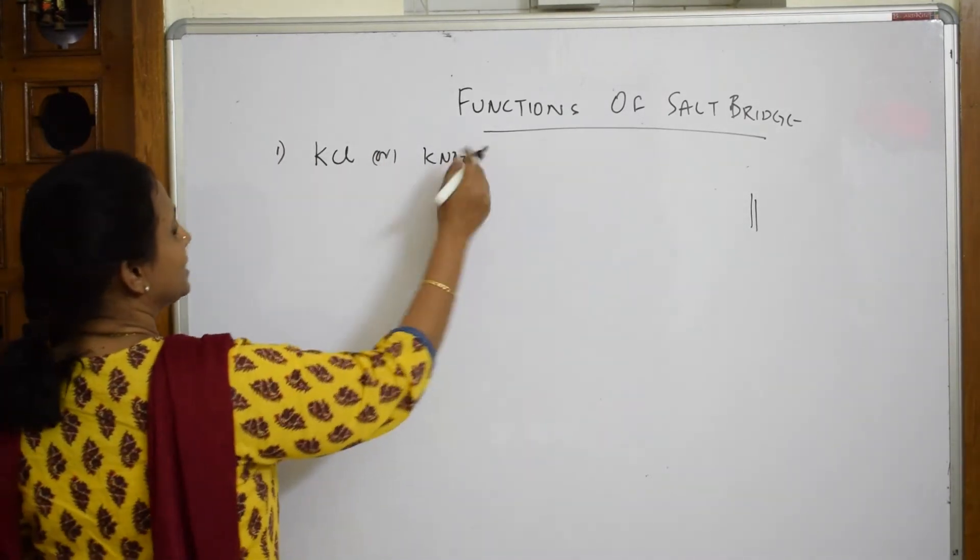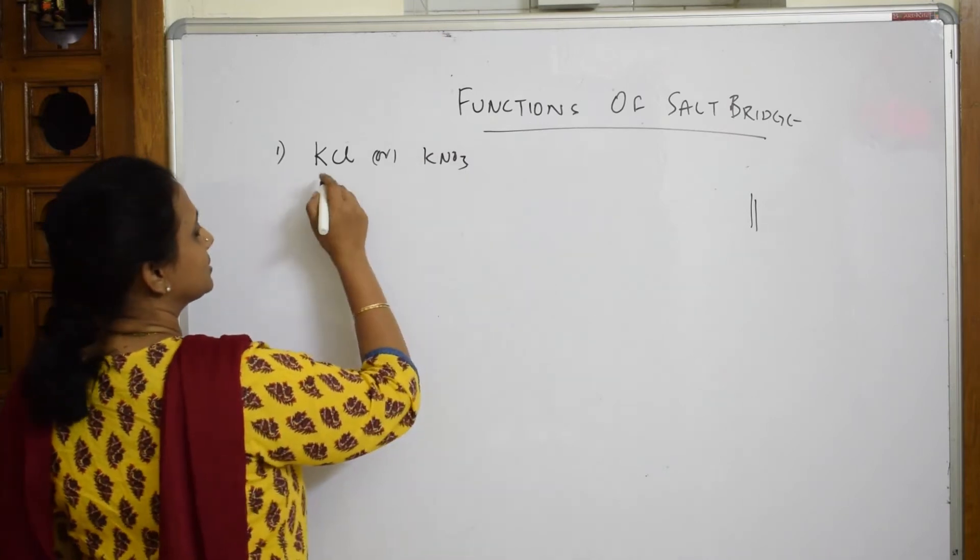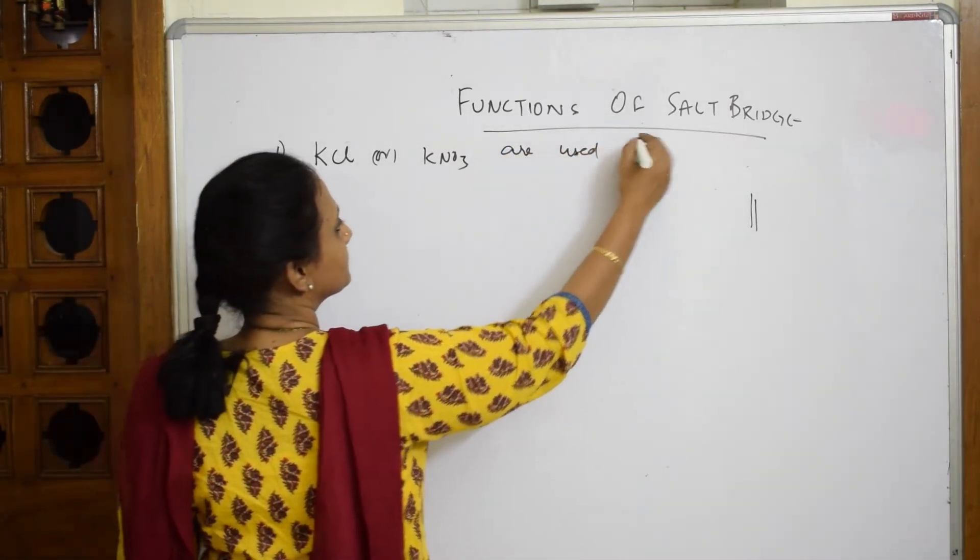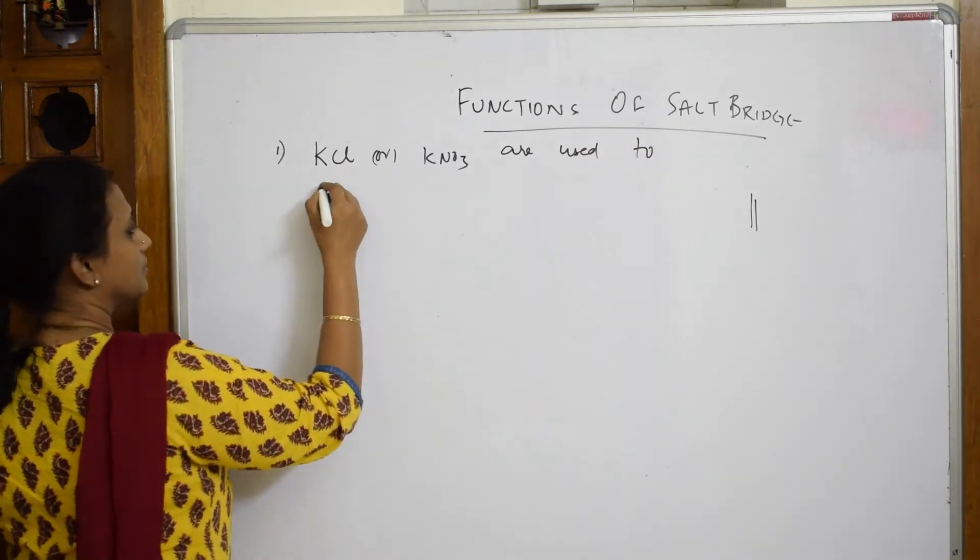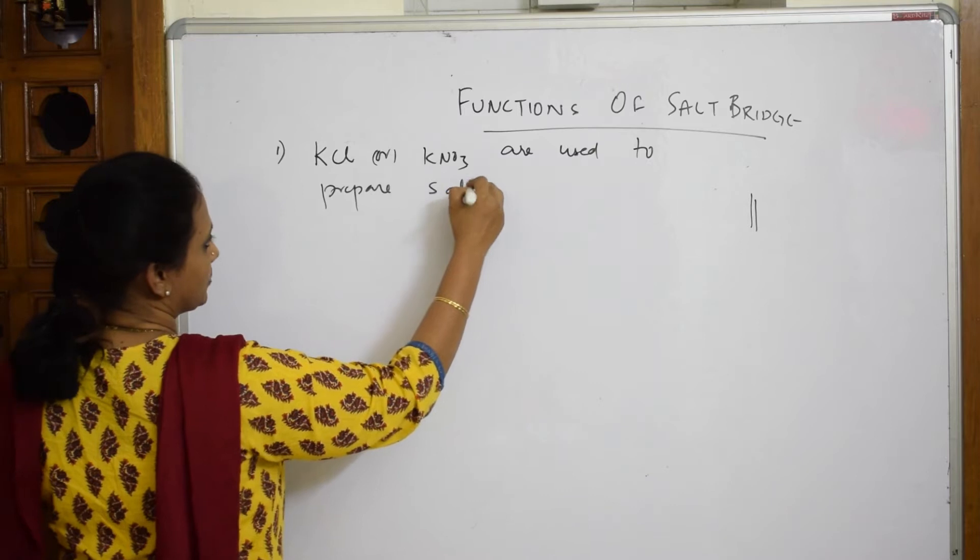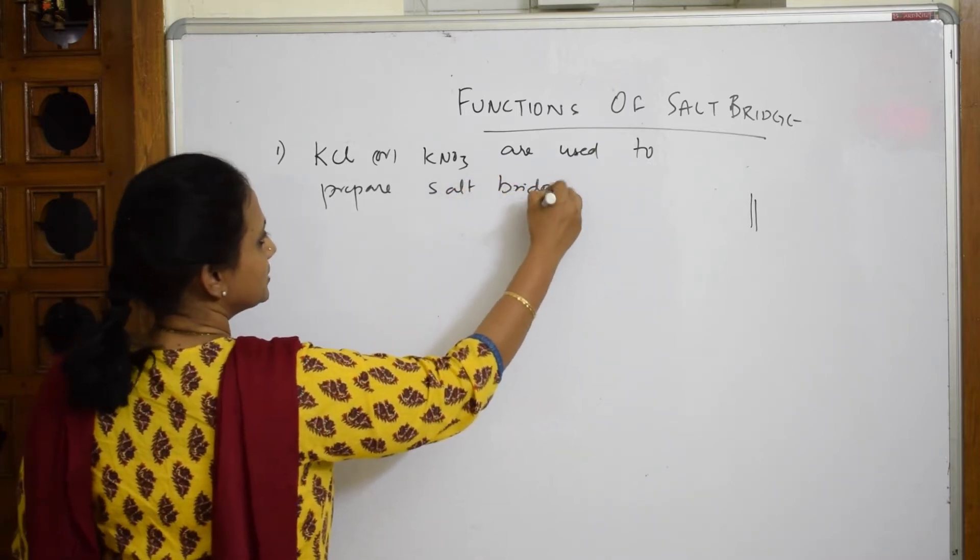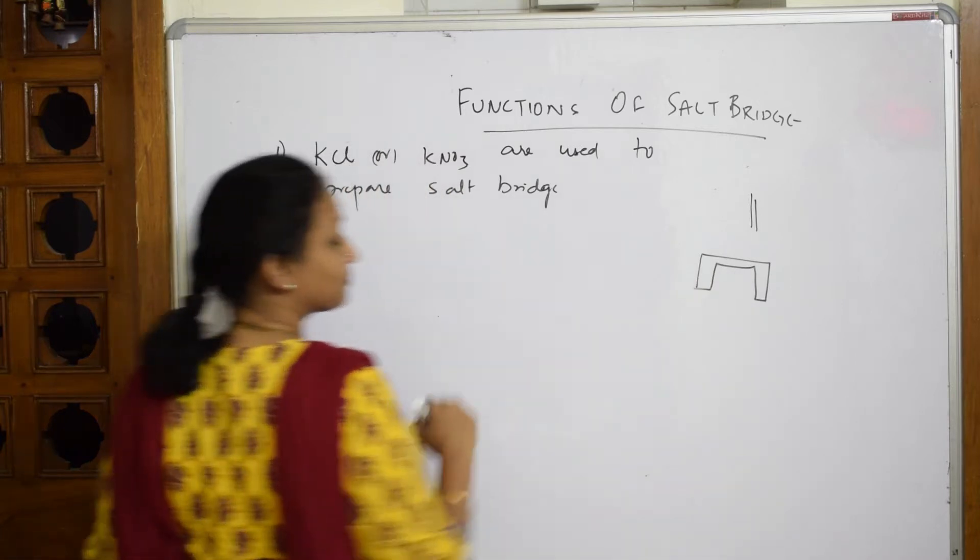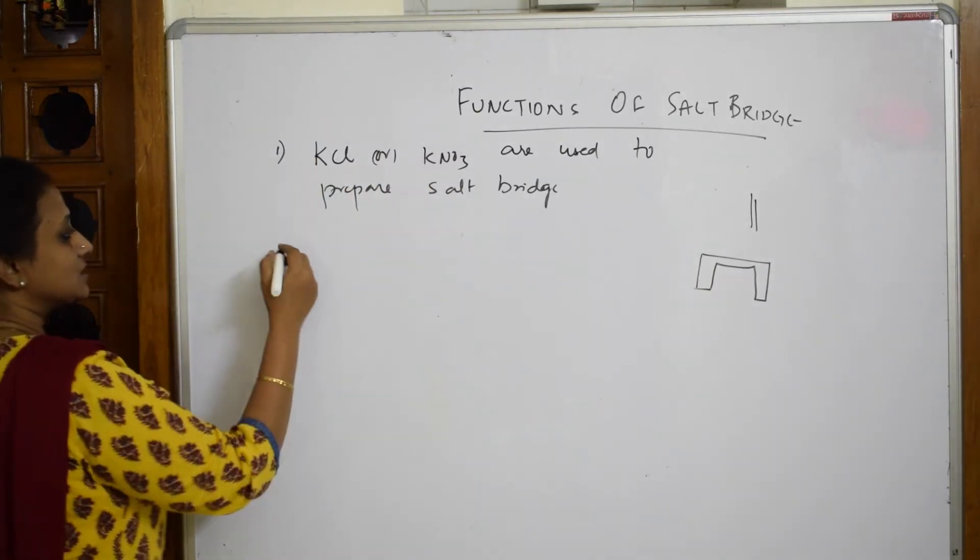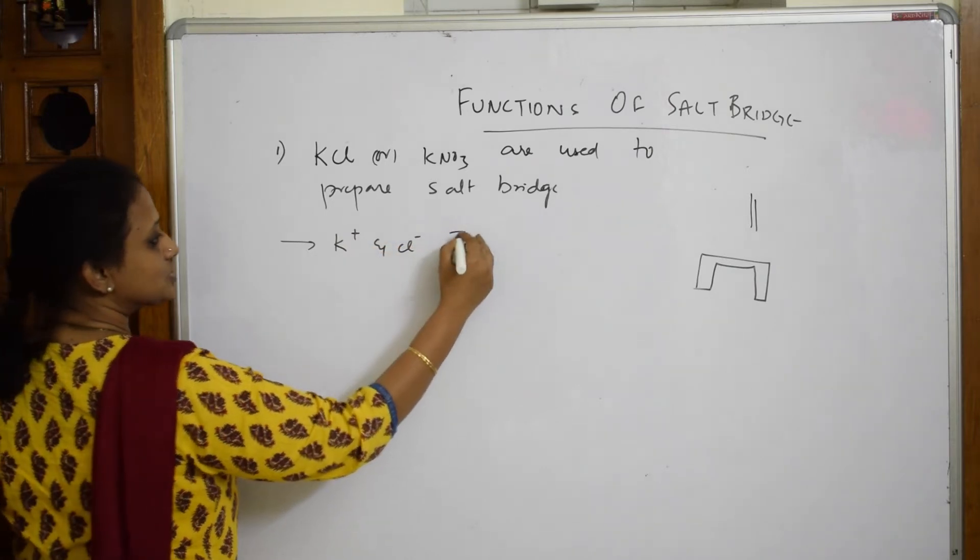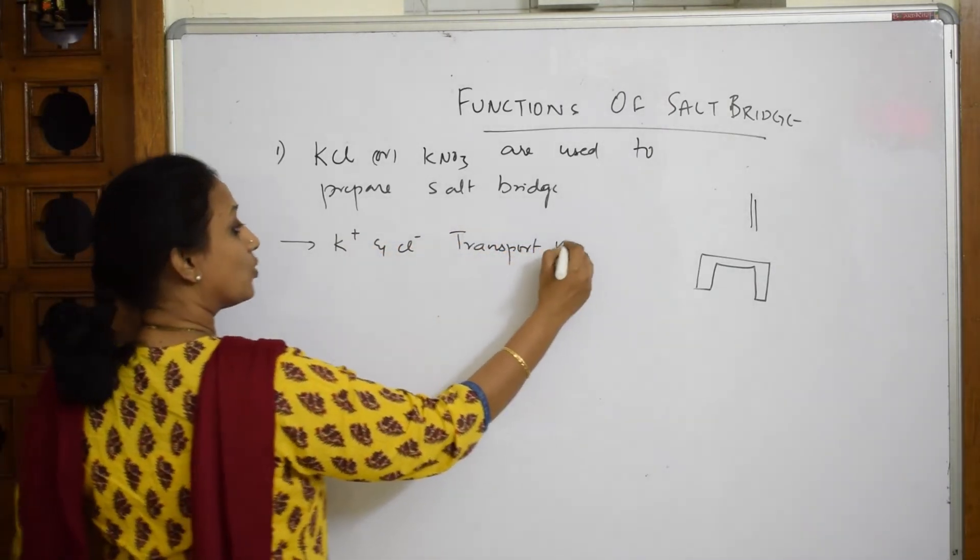Why this? Because KCl and KNO3, when I see the transport number of them, KCl salts are used to prepare salt bridges. The salt bridge is this U-shaped thing which connects both the half cells. Now why are we taking this? Because the K+ and Cl- transport numbers...